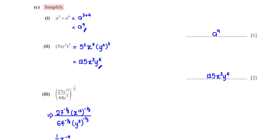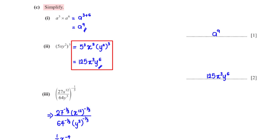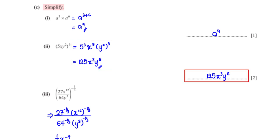Simplify 5xy² all raised to the power 3. By applying the laws of indices, we rewrite this as 5³ times x³ times y² all cubed. 5 cubed is 125, and the powers of y multiply: y raised to the power 2 times 3 is y to the power 6. So our final answer is 125x³y⁶.